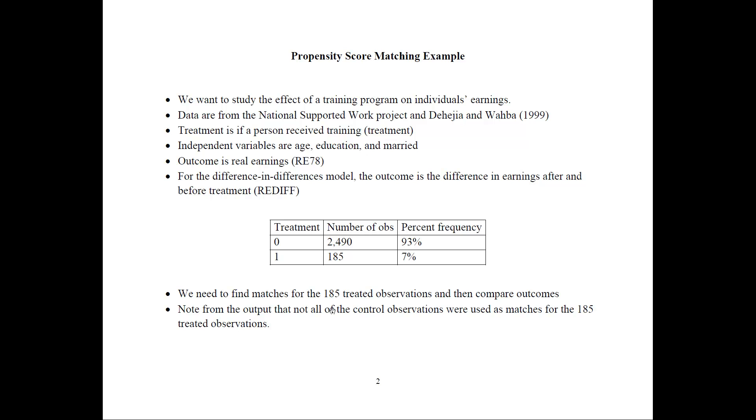These are some of the descriptive statistics from the data. We have treatment zero or one. For the treated, we have 185 treated observations, and we have 2,490 controlled observations, many more controlled observations than treated. That's usually a good ratio of 7% to 93%. We have a lot of controlled observations to find good matches from. We need to find matches for those 185 treated observations, and then we would compare the outcomes. Note from the output that not all of these controlled observations would be used as matches for the treated observations.